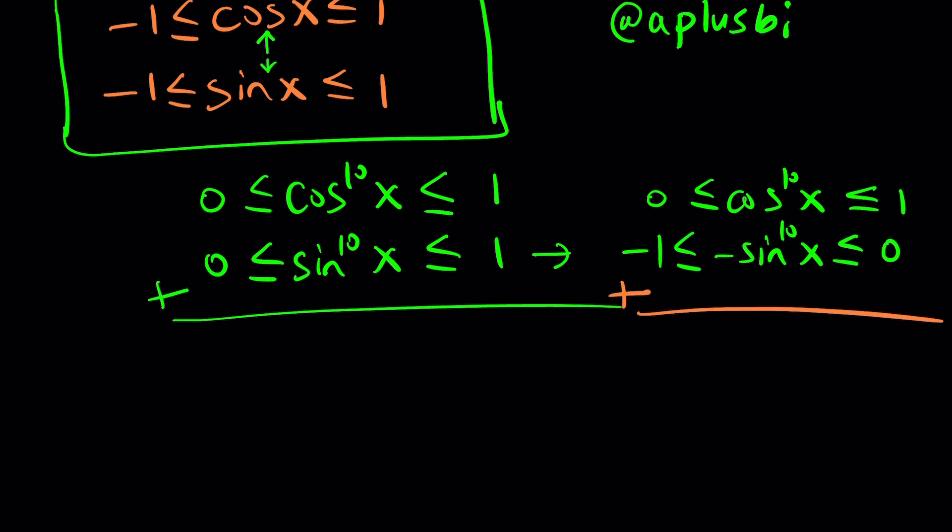And when we do, we're going to get something interesting. Cosine x to the 10th minus sine x to the 10th is going to be between negative 1 and 1, just like sine and cosine originally. But is that going to help at all? I do need this to be 1. By the way, these kinds of things don't always work well. You've got to be very careful, because sine and cosine are related.